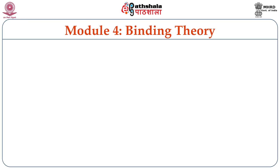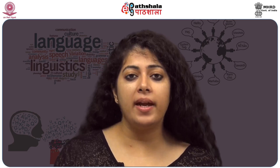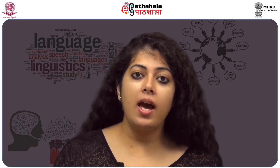Now let's talk about the second module: binding theory. Binding theory talks about coreference of nominal expressions in a sentence. Nominal expressions in a sentence can or cannot refer to another nominal expression depending on certain conditions which we term binding conditions. For example, 'John thinks that he is a genius' is perfectly fine if John and he are coreferenced. But 'he thinks John is a genius' is ungrammatical if he and John are coreferenced. Now there are three broad categories of referring nominal expressions: anaphors, pronouns, and R-expressions.